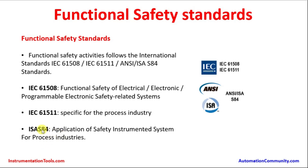ISA 84 covers the application of safety instrumented systems for process industries. IEC 61511 and ISA 84 are for the process industries, while IEC 61508 is for the manufacturers who make products for the safety instrumented system — such as sensors, logic solvers, or final control elements. All components within these three categories — sensor, logic solver, and final control elements — have to be certified and must follow the IEC standards.